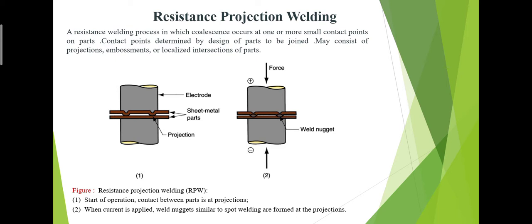If we want to talk about the definition of projection welding, then we can say that projection welding is a resistance welding process wherein coalescence is produced by the heat obtained from resistance to electric current flow through the work parts held together under pressure by electrodes. The resulting welds are localized at predetermined points by projections or intersections.